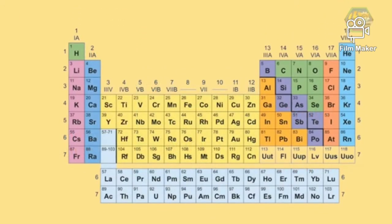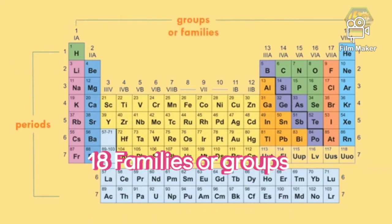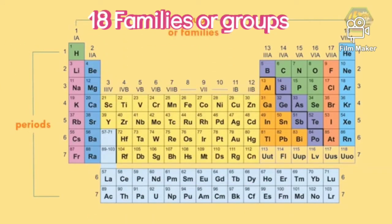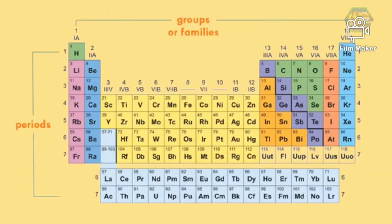Elements are arranged in periods and groups. There are 7 rows of the table which are called periods, and 18 columns are called groups or families. Each group contains elements with similar properties. Groups are divided into A and B.